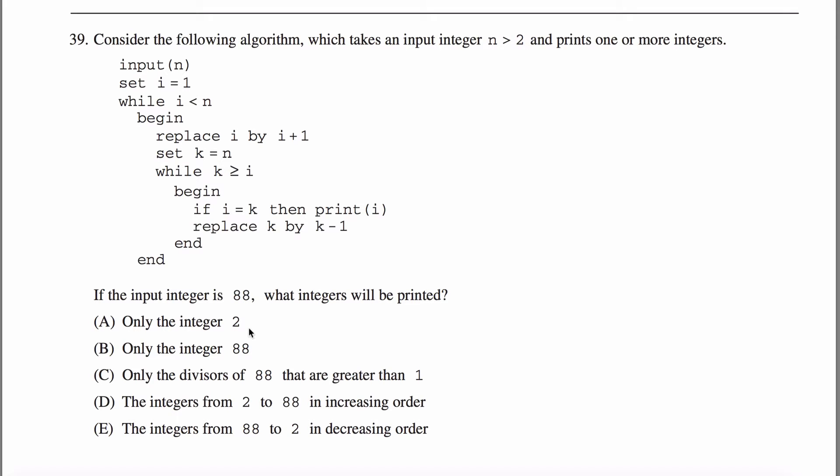The first thing to realize is that you're not going to have to go through this entire algorithm until it quits. You don't have to figure out everything that'll be printed because if you look at your answers, once you figure out the first two numbers that this thing prints, you'll be able to deduce the correct answer. Once you figure out the first thing printed, you'll be able to cross out a lot of these. And I think once you have the second one, you'll be done. So let's just follow through this algorithm and see what happens.